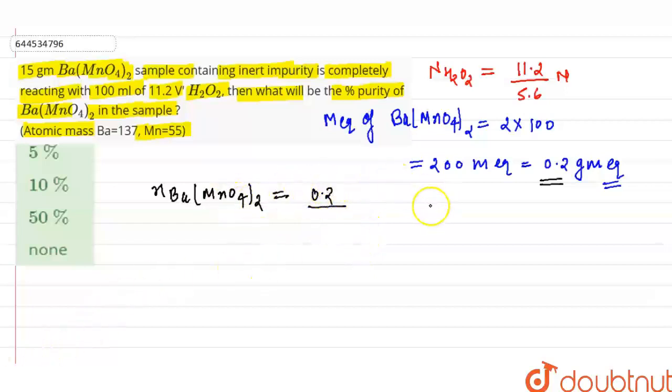Sorry, actually milliequivalent is milliequivalent is n into n-factor, where n is number of moles. So n-factor will be, milliequivalent is 0.2 gram equivalent, and n-factor will be 10 for Ba(MnO4)2.